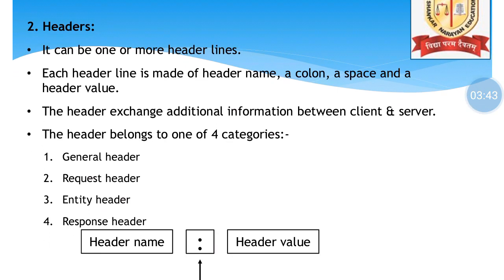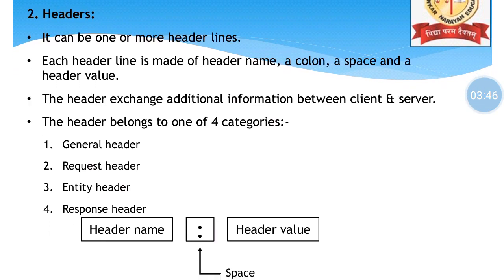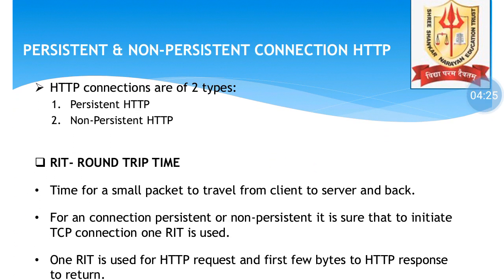Headers can have one or more header lines. Each header line is made of a header name, a colon, a space, and a header value. Headers exchange additional information between client and server. Headers belong to one of four categories: general header, request header (from client side), response header (from server side), or entity header (for both).